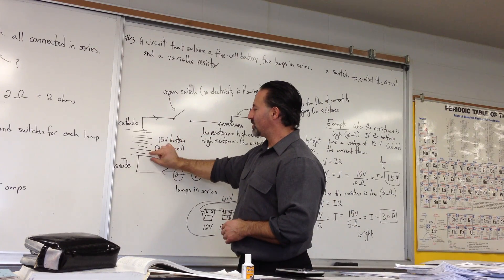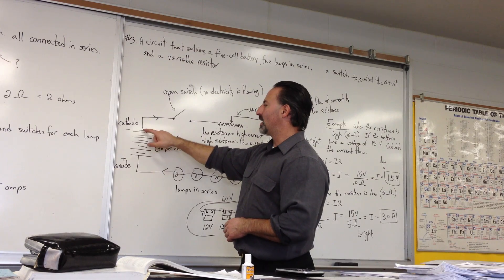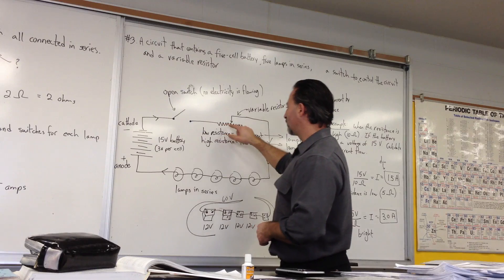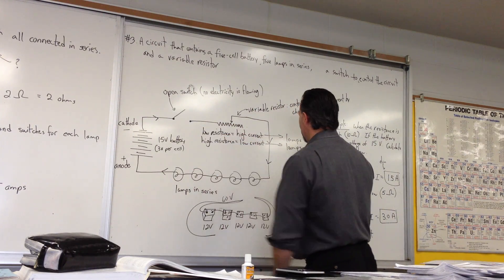This is a 5-cell battery. If each cell is 3 volts, then the total voltage of the battery is 15 volts. Again, the electrons come out of the negative side. If the switch is closed, the electricity will flow through, it'll go through the resistor, and it'll pass through all the lamps.